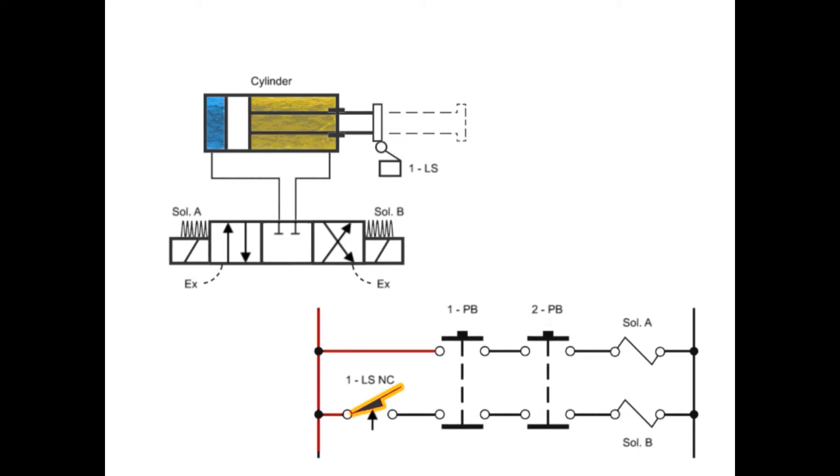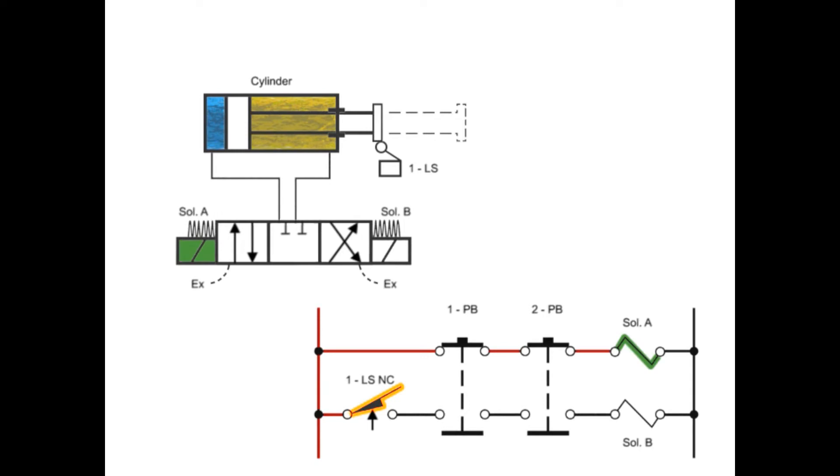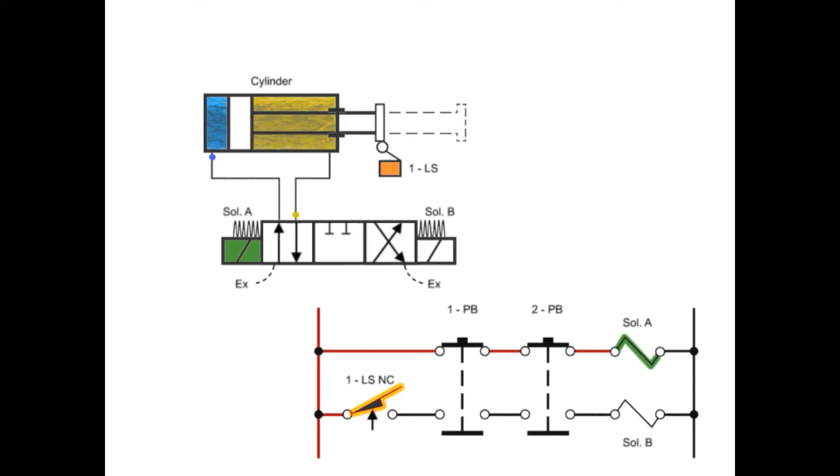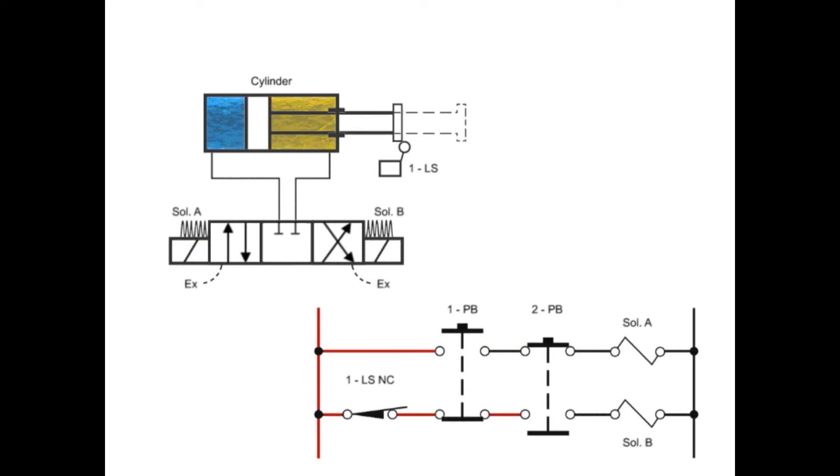Both buttons must be pressed to energize valve solenoid A and start the cylinder forward. When the cylinder begins to move forward, limit switch 1 is released and goes to its normally closed position. If either button is released, both solenoids de-energize and the springs return the valve to its neutral center position, stopping the movement of the cylinder.